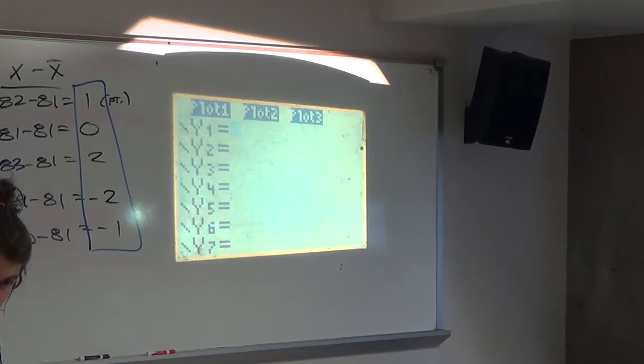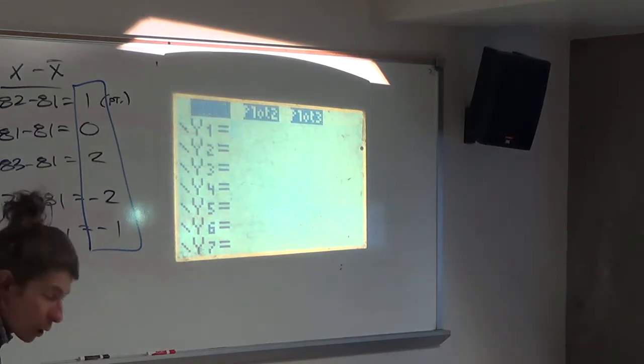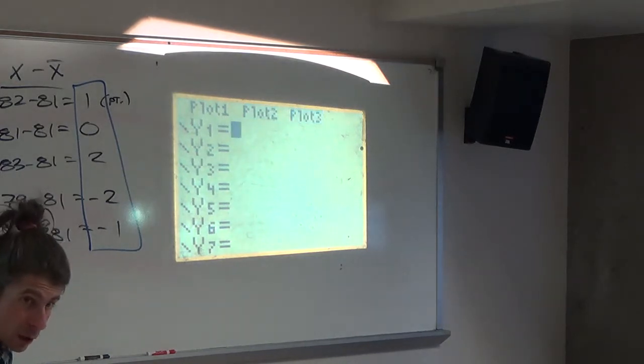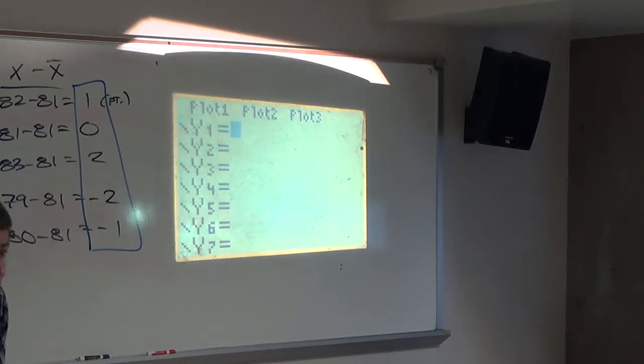Does anybody see highlighted plot ones? If you do, cursor on top and press enter, that toggles them off. We're going to be turning them on soon enough. That's great. But for right now, it just gets in the way. So you want nothing in the Y equals, no plots on.